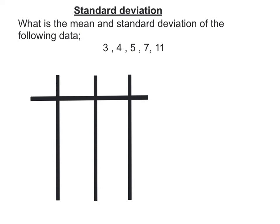Let's calculate the mean first. The mean, which we're now going to denote as x̄ — x with a line above it — is found by adding these numbers up and dividing by how many there are. If I add all these numbers up, I get 30. There are five numbers, so my mean is 6.